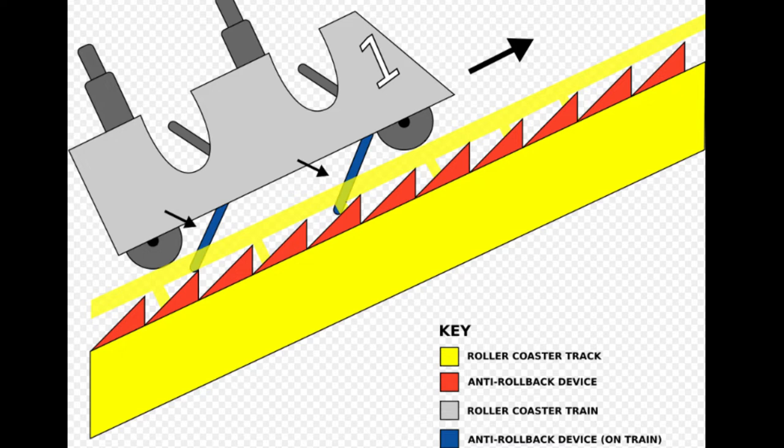Let's say something happens—the lift malfunctions or breaks. This is to make sure the coaster doesn't fall backwards.